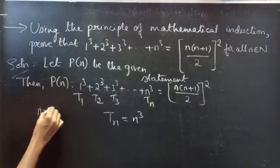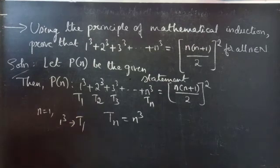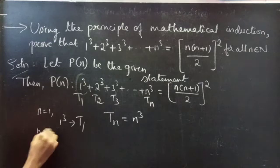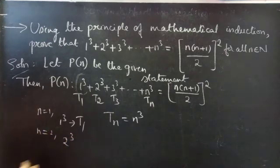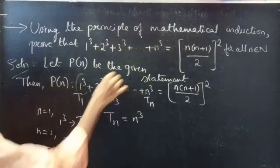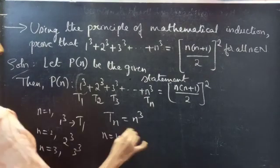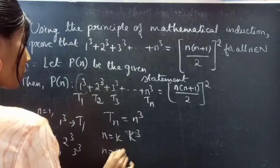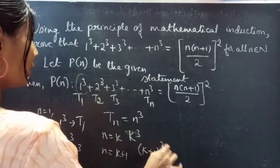When you substitute n equals 1, you will get 1³, which is our first term. Likewise, if you substitute n equals 2, you will get the second term. If you substitute n equals 3, you will get 3³, which is our third term. When you substitute n equals k, you will get the kth term, that is k³. Likewise, if you substitute n equals k+1, you will get the (k+1)th term.